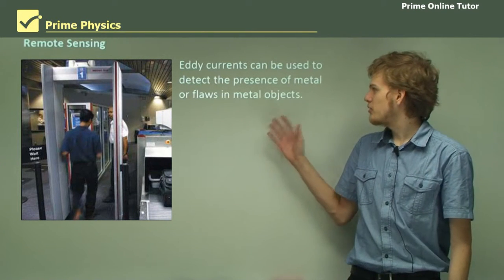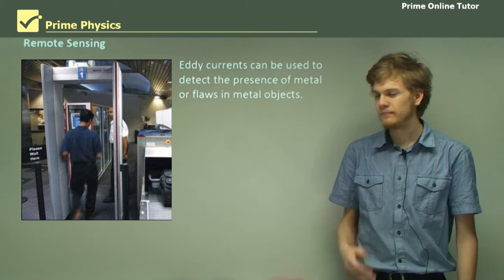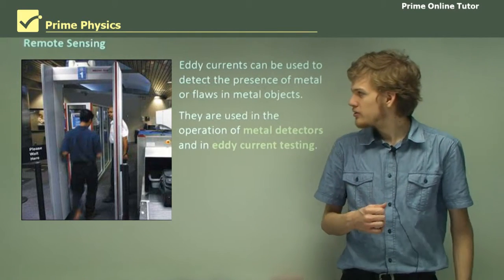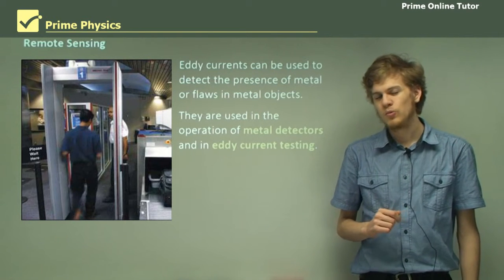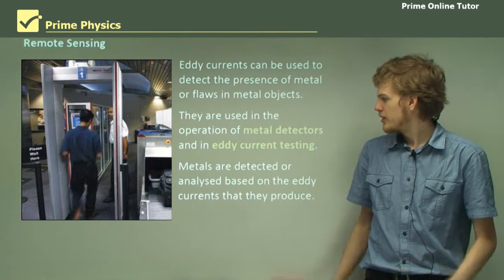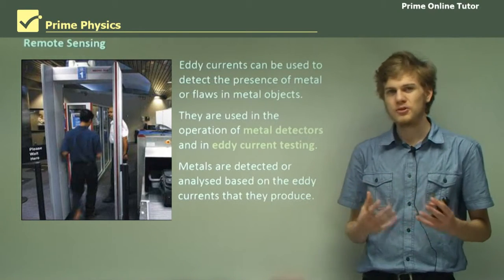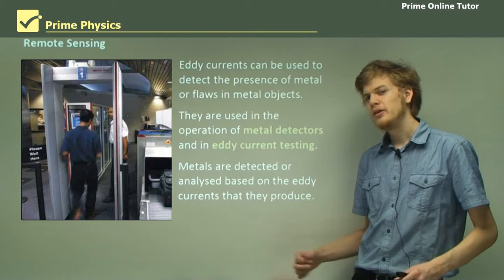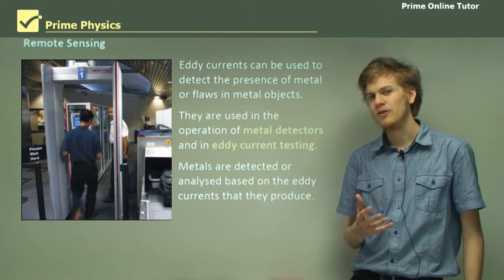This is the principle of operation for devices like metal detectors. Eddy currents can detect the presence of metal or flaws in metal objects. They're used in the operation of metal detectors and also in eddy current testing, which is a way of testing metal for flaws. Metals are detected or analyzed based on the eddy currents that they produce. If we have a metal, it will produce an eddy current that we can pick up.